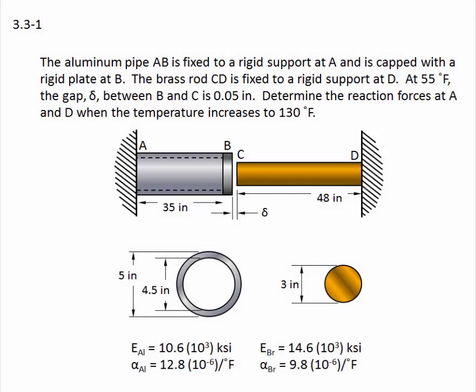Problem 3.3-1. The problem reads: the aluminum pipe AB is fixed to a rigid support at A and is capped with a rigid plate at B. The brass rod CD is fixed to a rigid support at D. At 55 degrees Fahrenheit, the gap delta between B and C is 0.05 inches. Determine the reaction forces at A and D when the temperature increases to 130 degrees Fahrenheit.